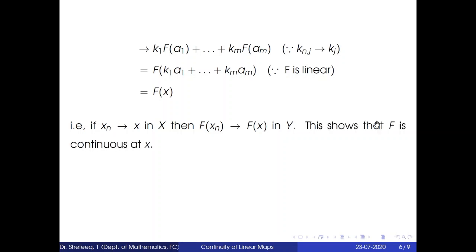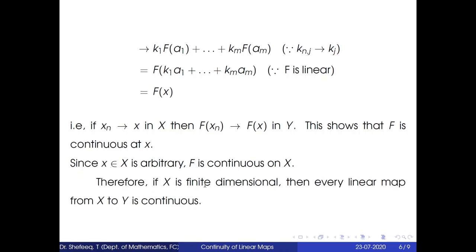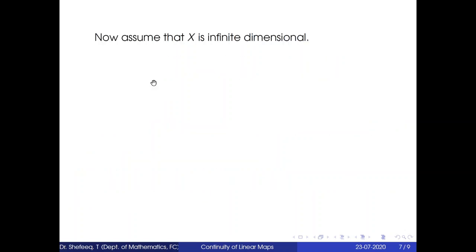This shows that f is continuous at x. Since x in X was arbitrary, f is continuous at each point of X, meaning f is continuous on X. Therefore, if X is finite dimensional, every linear map from X to Y is continuous.